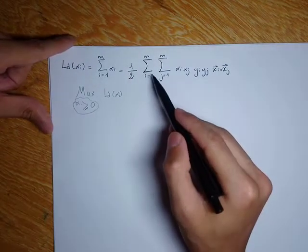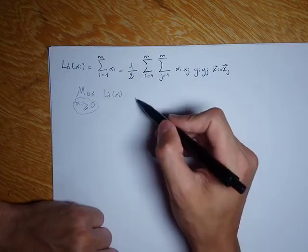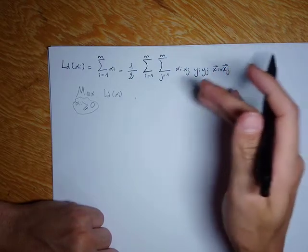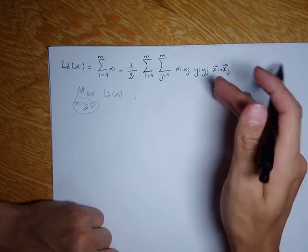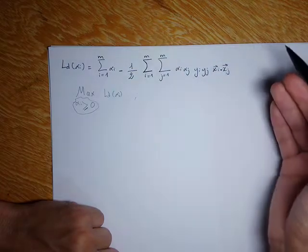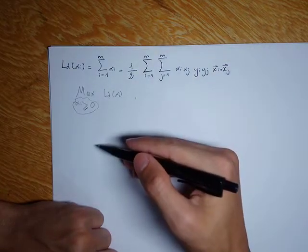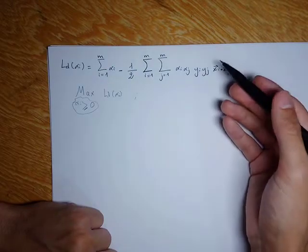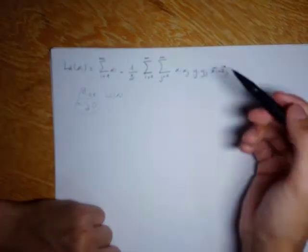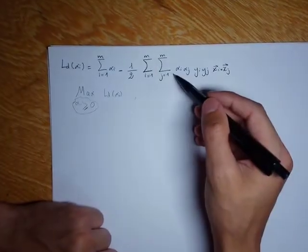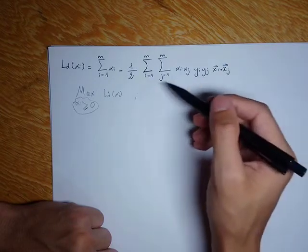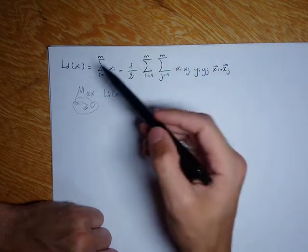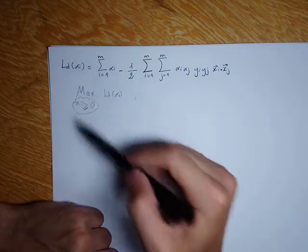To solve this we use numerical methods, because it's analytically difficult or even impossible to solve. What we basically do is try different values of alpha_i and see which of these values would yield a maximum value for this expression.